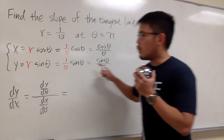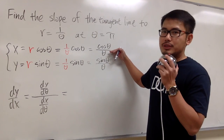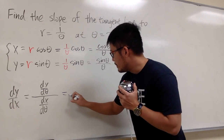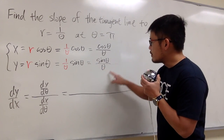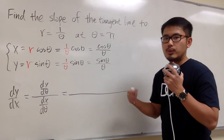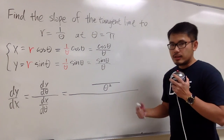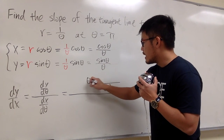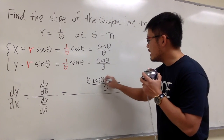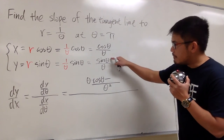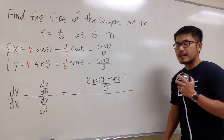For dy/dθ, we look at the y equation, which is sine theta over theta, and take the usual derivative. Since this is a quotient, we use the quotient rule. We square the denominator — theta squared — then keep the bottom function theta, multiply by the derivative of the top, which is cosine theta, and subtract sine theta times the derivative of the bottom, which is 1.